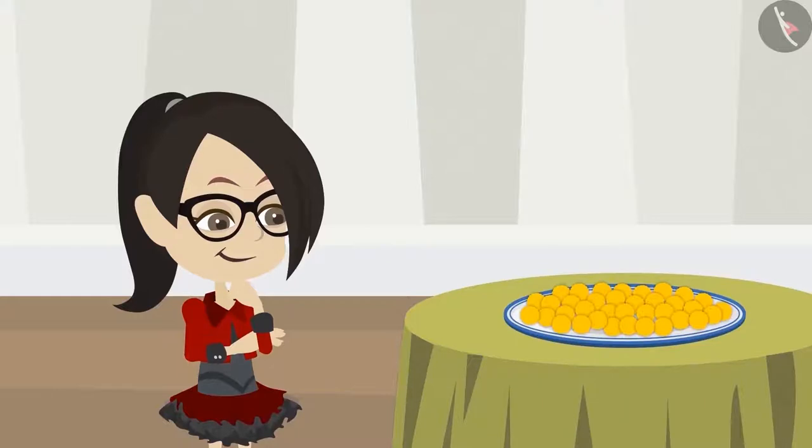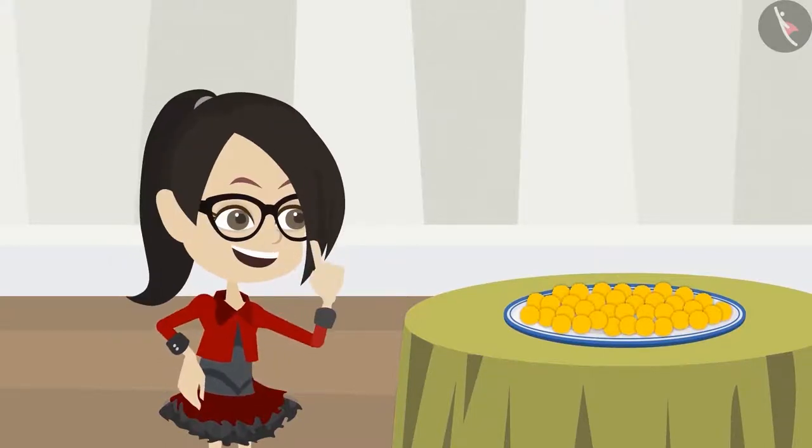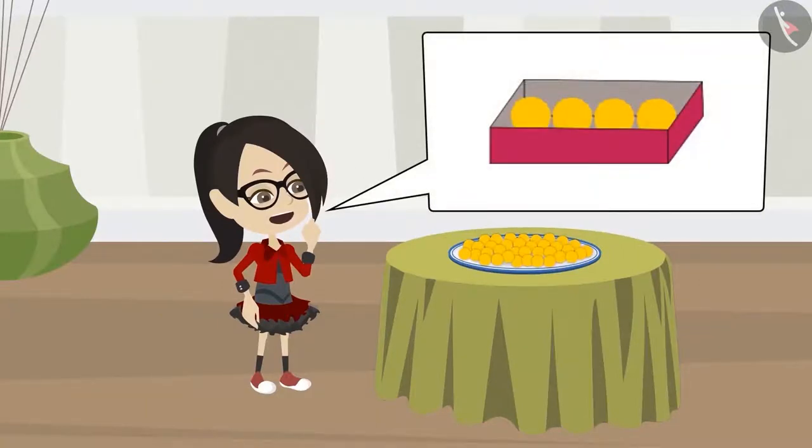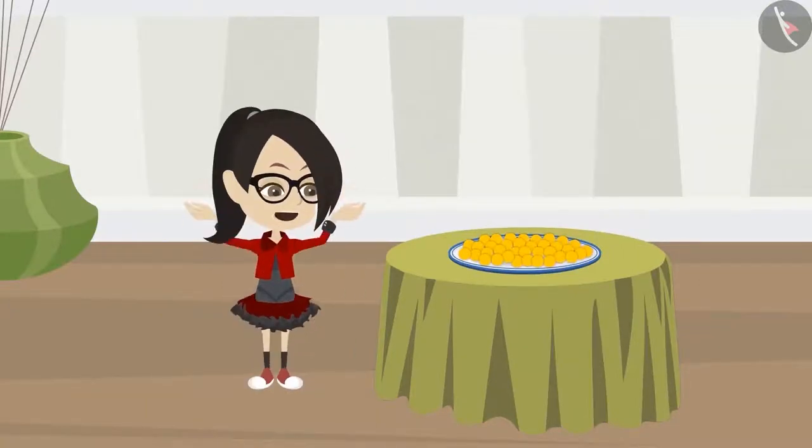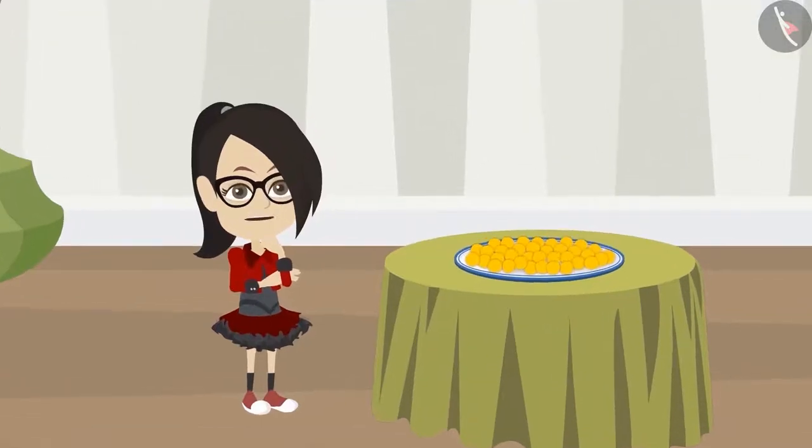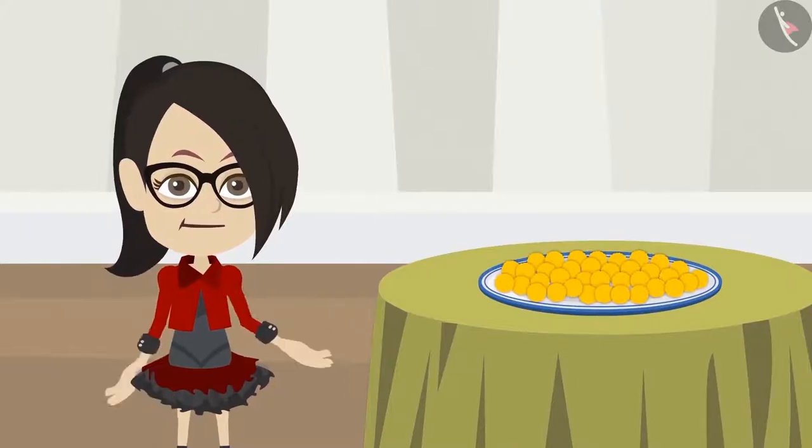Vandana looks at the ladoos. Vandana has come up with an idea that she can find out in how many boxes these ladoos will fit. I know that four ladoos will come in a box. I'll try to make groups of four ladoos. The more groups I make, the more boxes I have to bring from the market. You two help me divide the ladoos into groups, okay?